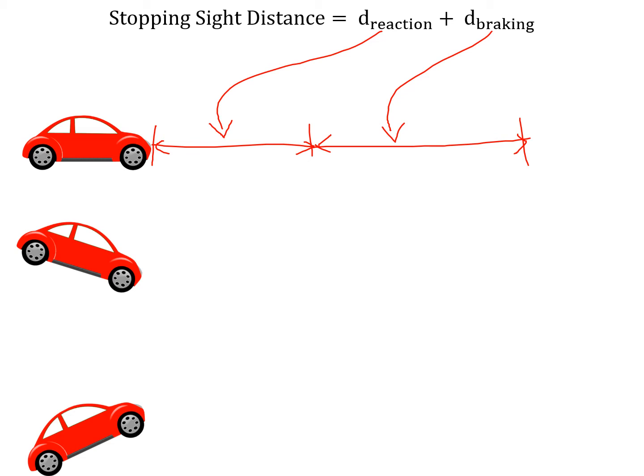The important measurements for stopping sight distance are 2 feet. Whatever the object is, we're going to assume it has a height of 2 feet. This is all built into the equations that we'll see later. And the eye height of the driver is 3.5 feet. Those are the two assumptions that are built into these calculations and to stopping sight distance.